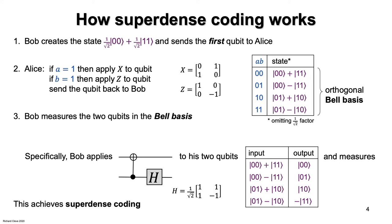Now, we've previously seen the technique of measuring in an alternate basis. For example, in Lecture 1, in order to distinguish between the ket+ state and the ket− state, we measured with respect to that basis by applying a suitable unitary operation to convert that basis to the computational basis. In this case, Bob measures two qubits with respect to the Bell basis by also performing a suitable unitary operation to convert that basis to the computational basis.